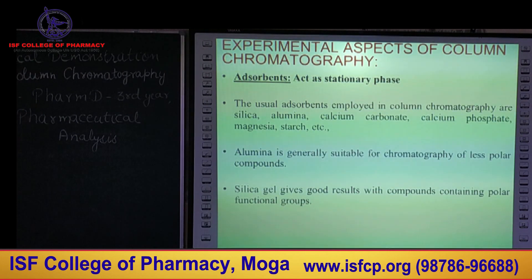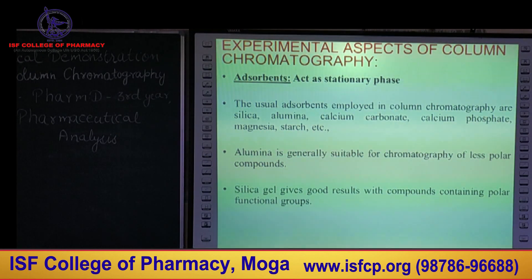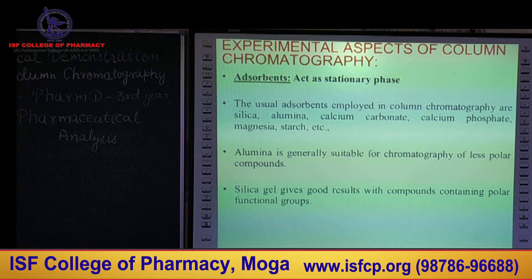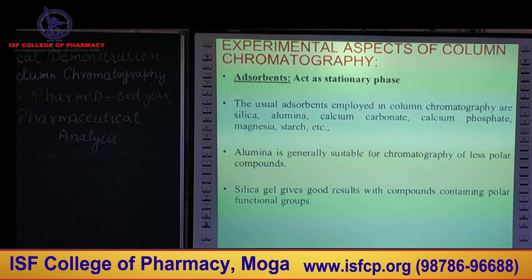Now the experimental aspects for column chromatography. First we need an adsorbent which acts as the stationary phase. Commonly employed adsorbents are silica, alumina, calcium carbonate, calcium phosphate, starch, and magnesia.